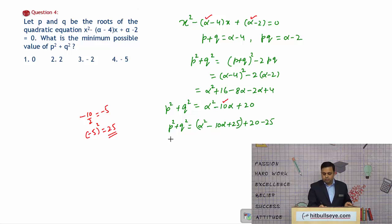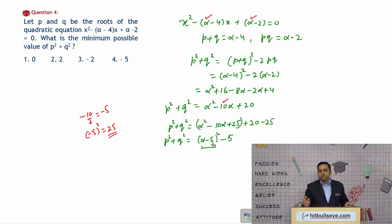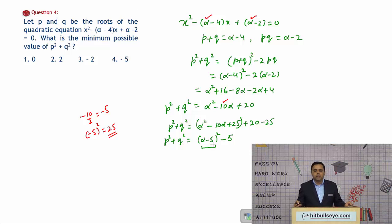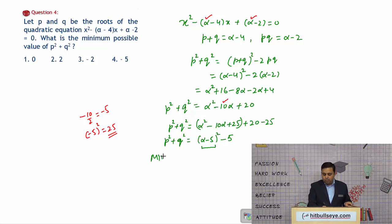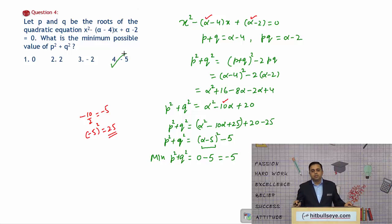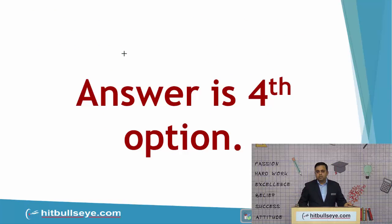This simplifies to p² + q² = (α − 5)² − 5. Since (α − 5)² is a perfect square, its minimum value is 0, obtained when α = 5. Therefore the minimum value of p² + q² = 0 − 5 = −5. So option 4 is the answer. Whenever you have such questions, try to make the right-hand side a perfect square.